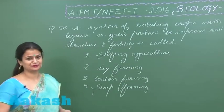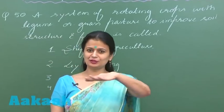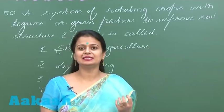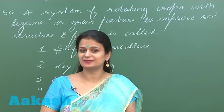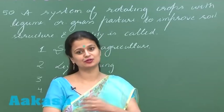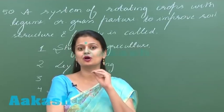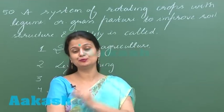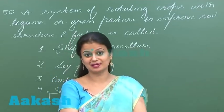Let's see question number 50. Due to the growth of the crops, the fertility of soil decreases. How is this fertility retained? How can the soil structure be maintained? It can be maintained by crop rotation. In crop rotation, we grow leguminous plants.